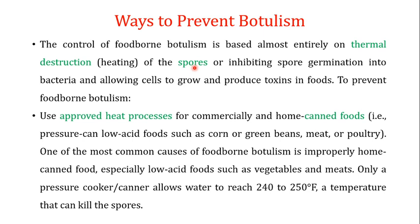The important prevention steps are: use approved heat processes for commercially and home-canned foods — pressure-can low-acid foods such as corn, green beans, meat, or poultry. One of the most common causes of foodborne botulism is improperly home-canned food. For low-acid foods like vegetables and meats, use a pressure cooker or pressure canner to allow water to reach 240–250°F, a temperature that can kill the spores and destroy any toxin.